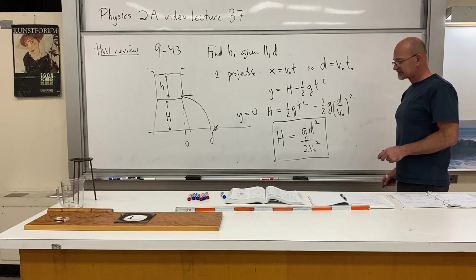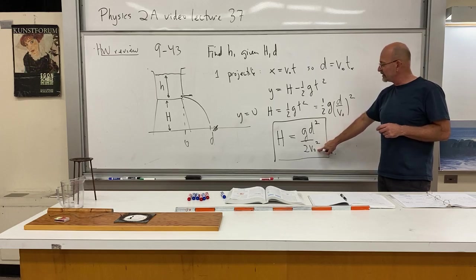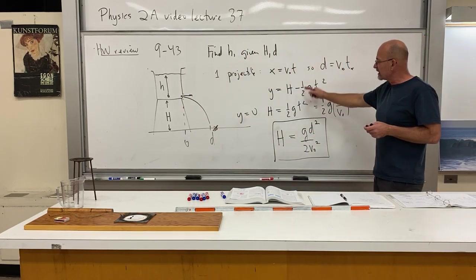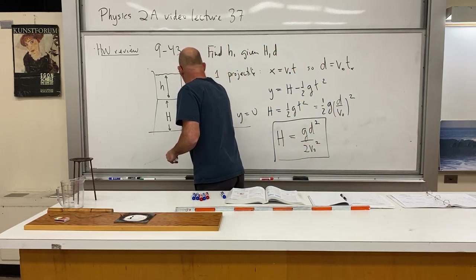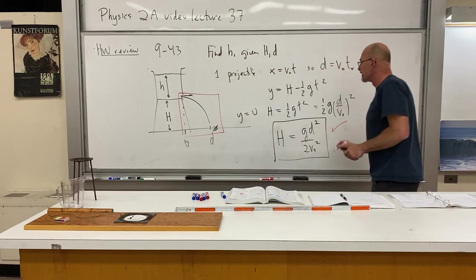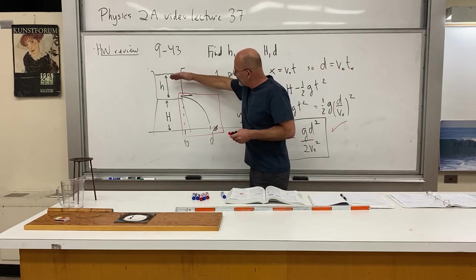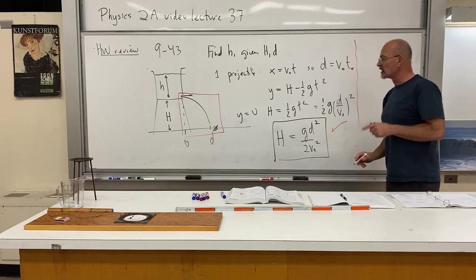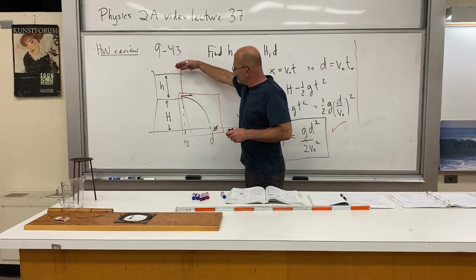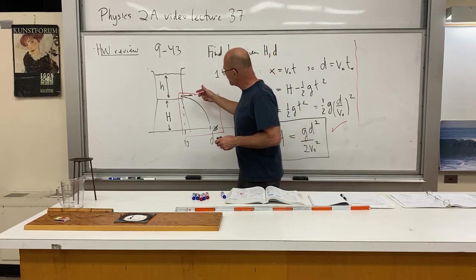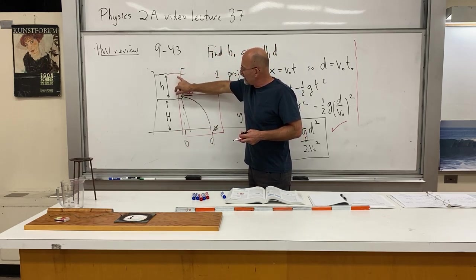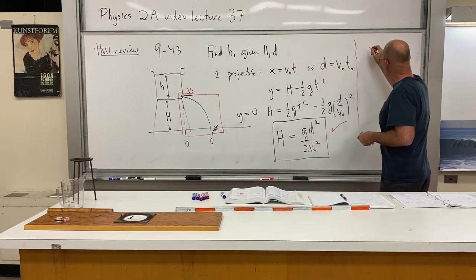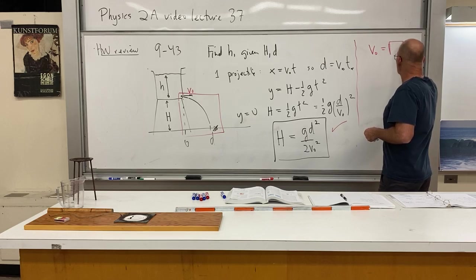We're going to get v₀ in terms of h. This is a projectile problem relating all these quantities. Now the fluids aspect is the Bernoulli's equation part. For water leaving a tank, we found that the speed v₀ is given by the free-fall expression for something traveling distance h under gravity: v₀ = √(2gh).